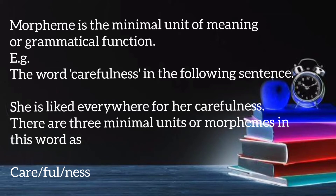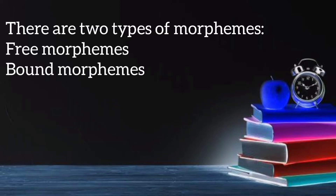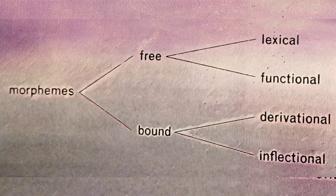A morpheme is the minimal unit of meaning or grammatical function. For example, the word 'carefulness' in the sentence 'She is liked everywhere for her carefulness' contains three minimal units or morphemes: 'care', 'full', and 'ness'. There are two types of morphemes: free morphemes and bound morphemes.